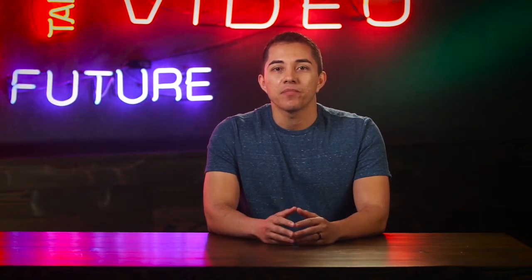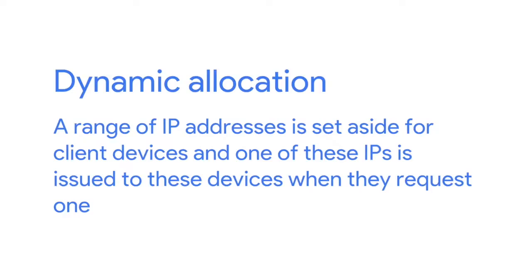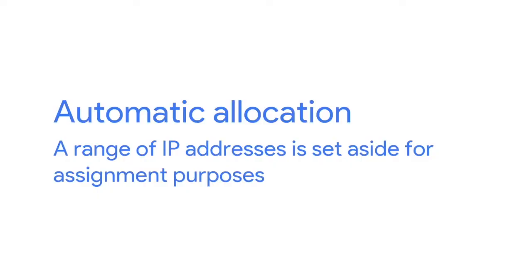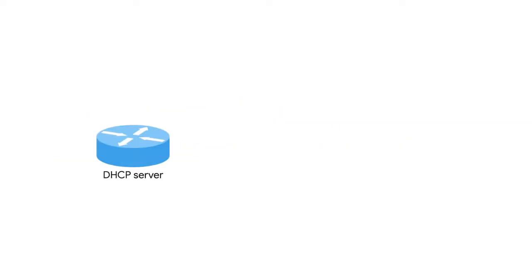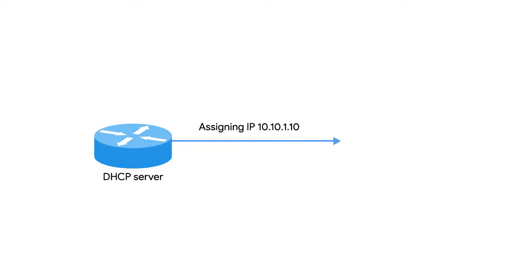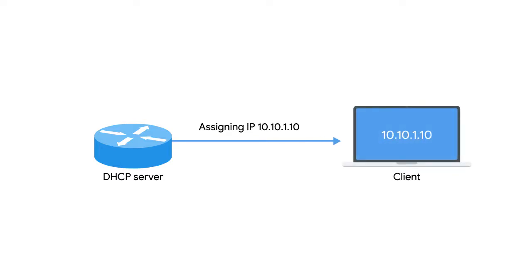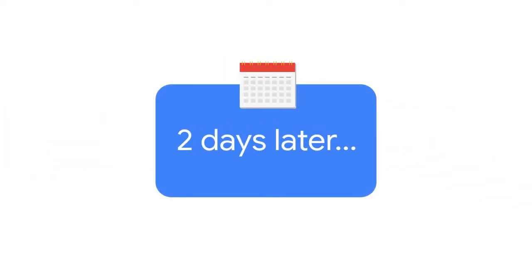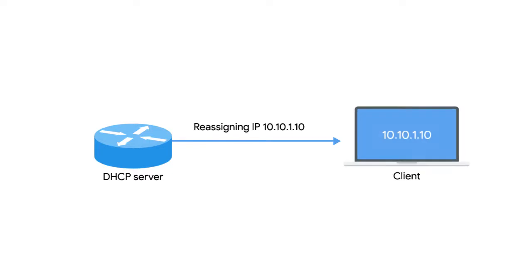There are a few standard ways that DHCP can operate. DHCP dynamic allocation is the most common — a range of IP addresses is set aside for client devices, and one of these IPs is issued when they request one. Under dynamic allocation, the IP of a computer could be different almost every time it connects to the network. Automatic allocation is very similar, but the DHCP server keeps track of which IPs it has assigned to certain devices in the past, assigning the same IP to the same machine each time if possible.